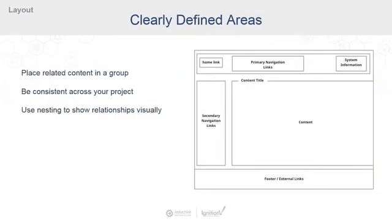Next up, we have clearly defined areas. We want to give our content its home on the screen, and we accomplish that through grouping similar types of content. The goal is to let users know where they can find information — we really don't want them hunting around the screen looking for things, especially once they've found something like it before.